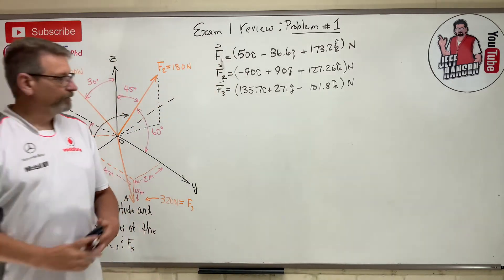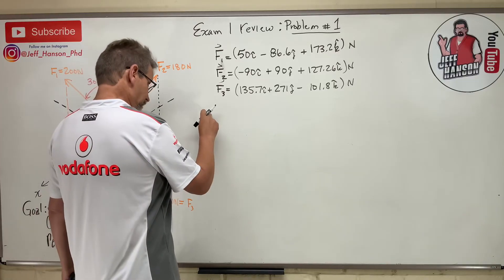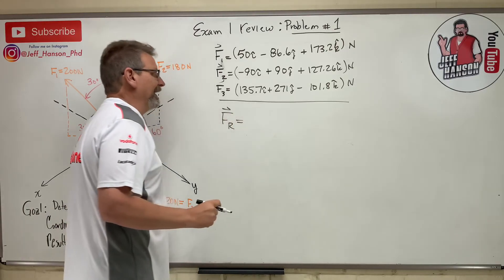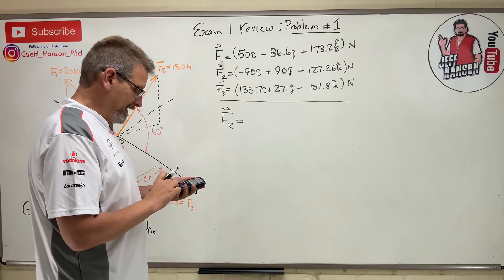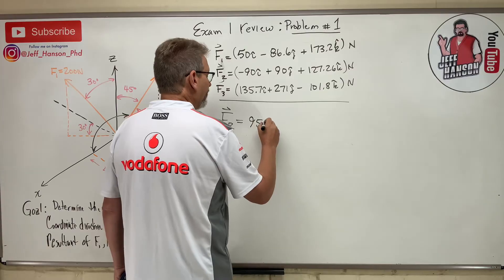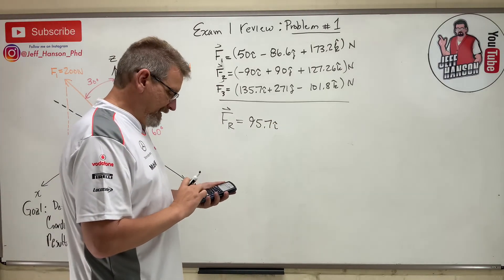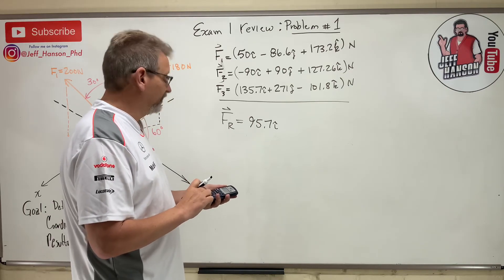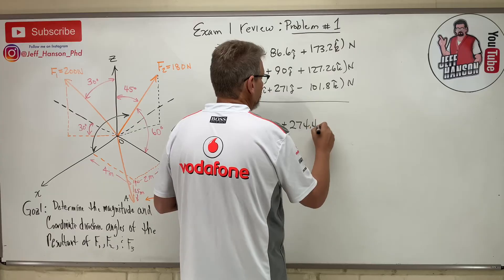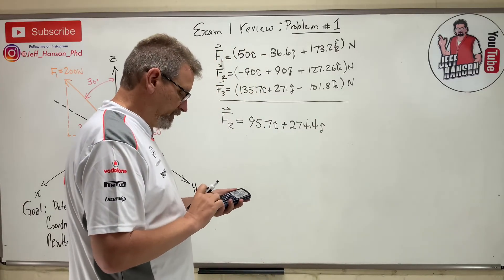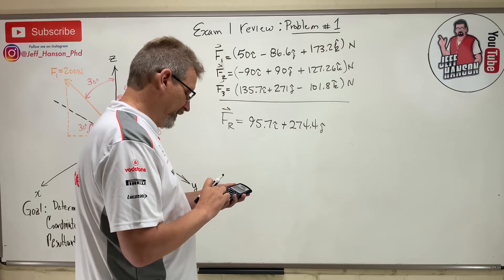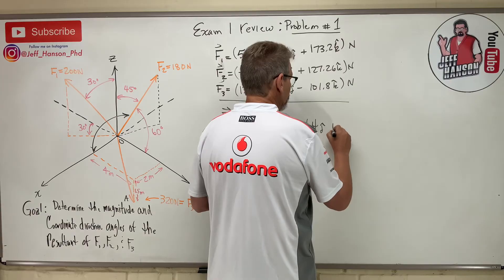Now add all components to get the resultant vector FR. i-component: 50 − 90 + 135.7 = 95.7N. j-component: 90 + 271 − 86.6 = 274.4N. k-component: 173.2 + 127.26 − 101.8 = 198.66N.